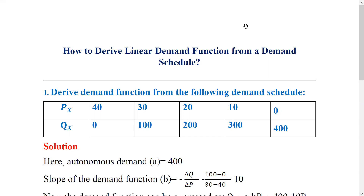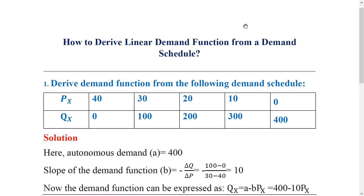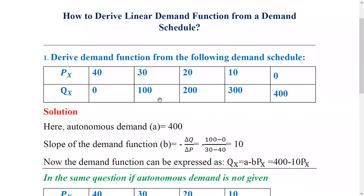So A is the intercept value finder and B is the slope value finder. From the demand schedule, the autonomous demand A is 400 units, and B is the slope of the demand function.